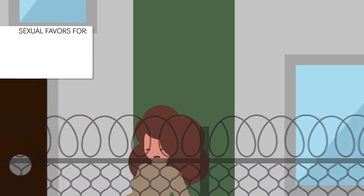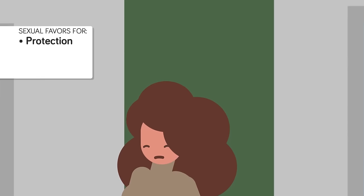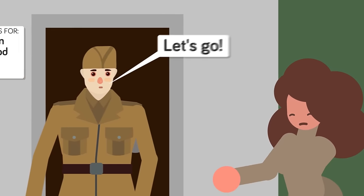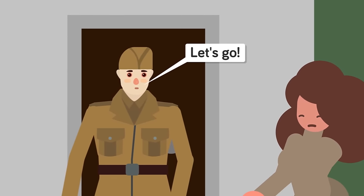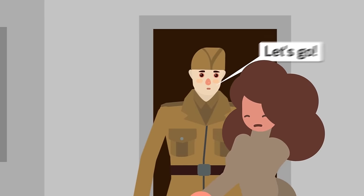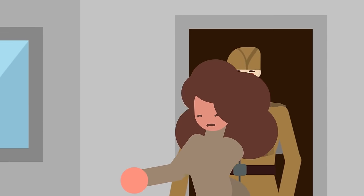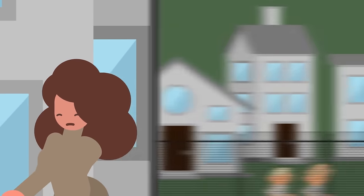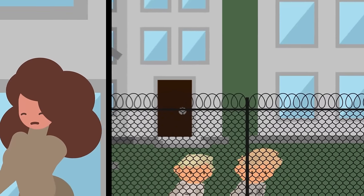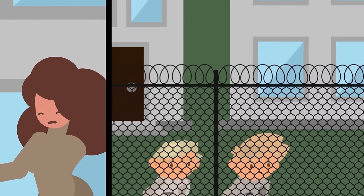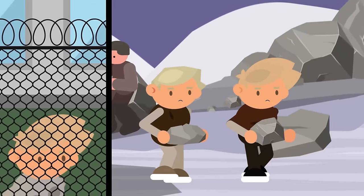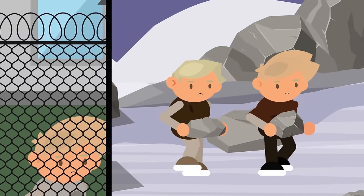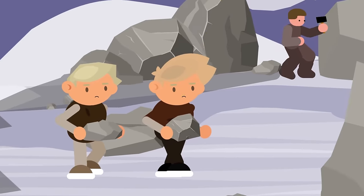Guards could coerce women to do what they wanted with the promises of better food, clothing, or perhaps shelter, or simply do what they pleased with the female prisoners, as they would face absolutely no repercussions for assaulting someone seen as an enemy of the state. Children too were at risk, as they were often thrown into prison camps along with the adult population and could also face the risk of being preyed upon by both the other prisoners and guards alike.